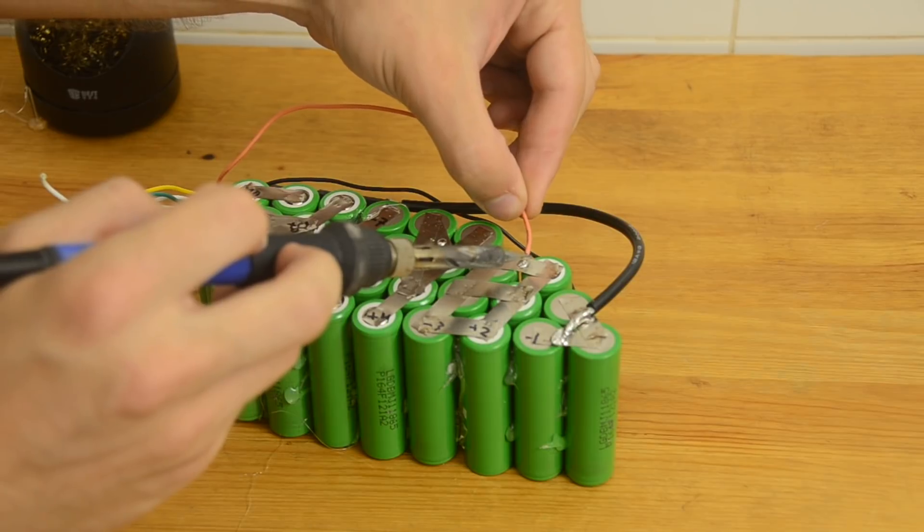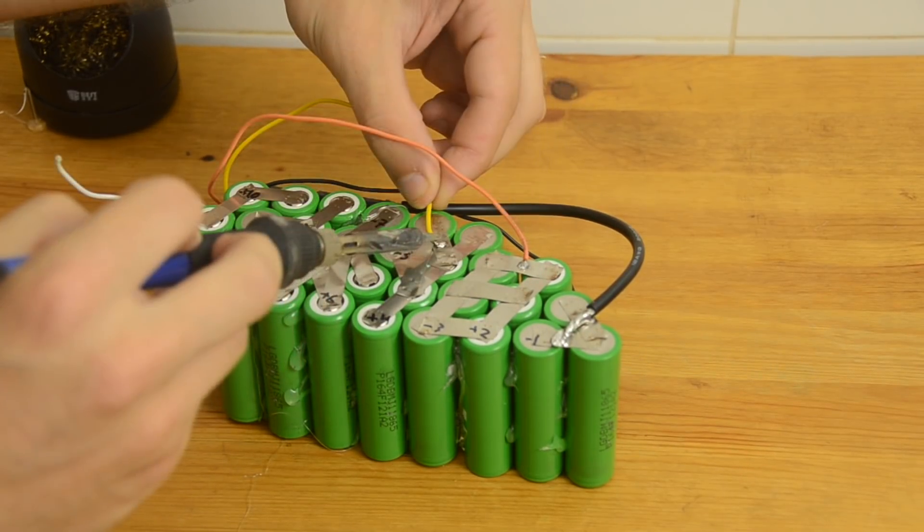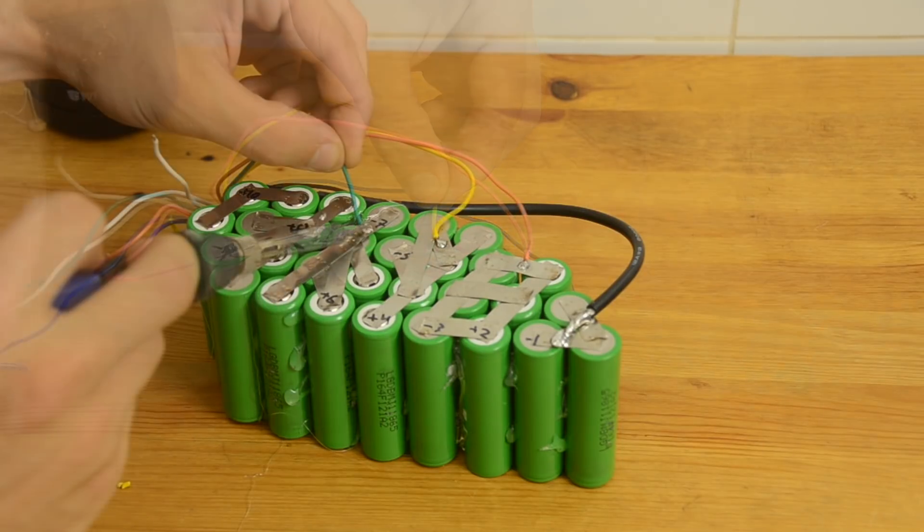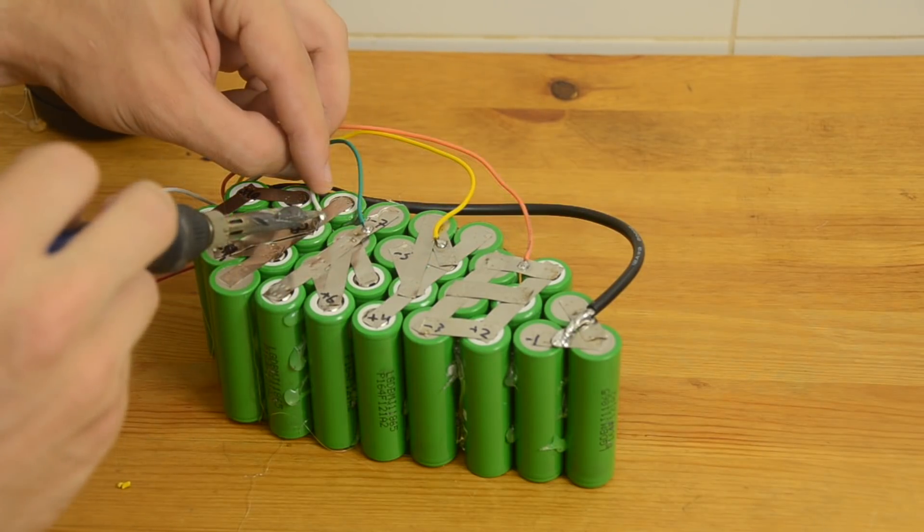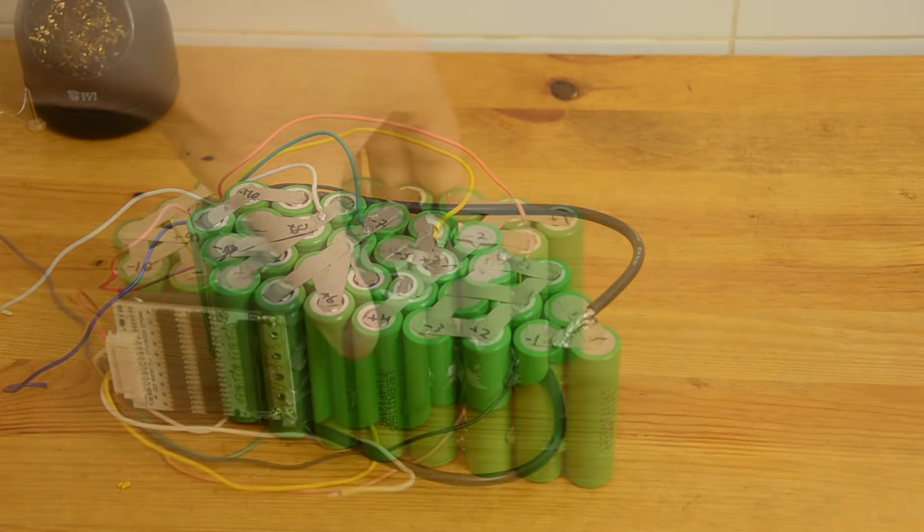Now I can start soldering on my balance wires on this side of the pack. Here I'm connecting the plus 2 balance wire, then the plus 4 wire, then plus 6, and then plus 8. I'll save plus 10 to do after I connect the positive charge wire at that same location.